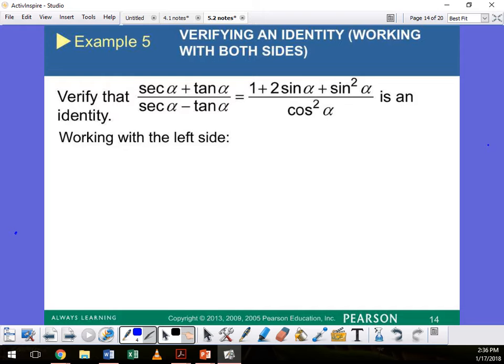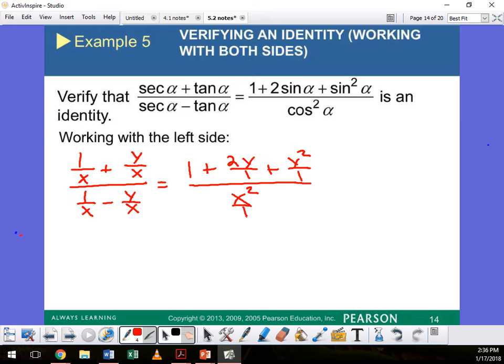So if I translate this into algebra, what do we get on the left hand side? 1 over x plus y over x, all over 1 over x minus y over x. And that is equal to the right hand side, which is 1 plus 2y plus y squared, all over x squared. So I have all of that translated now.